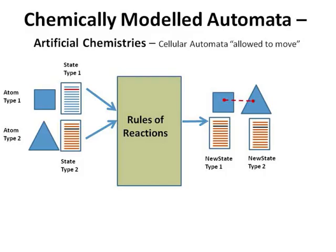The last example we have is for chemically modeled automata. This is where artificial chemistries essentially set the behavior of the individual automata, the state machines of those automata. I'd like to present the work of Dr. Tim Hutton on these artificial chemistries. In these types of units, they're not on a fixed grid anymore — the cellular automata are allowed to move. And as they meet other molecules or atoms, which essentially are what the automata themselves are, they can have chemical reactions based on defined rules.